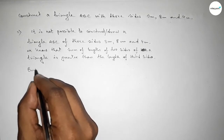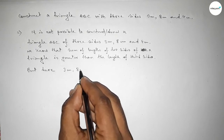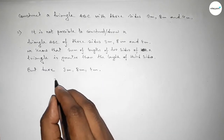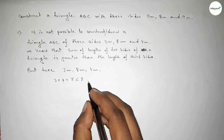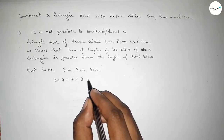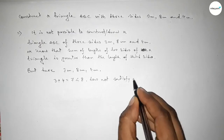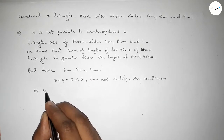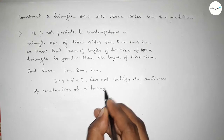With the given sides of three centimeters, eight centimeters, and four centimeters, if we add three and four, three plus four equals seven, which is less than eight. So it does not satisfy the triangle inequality condition.